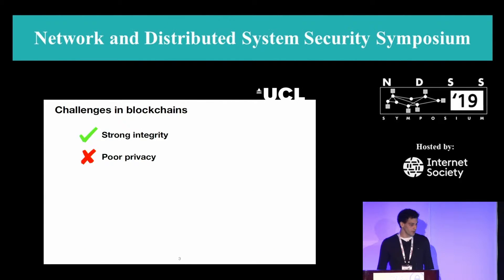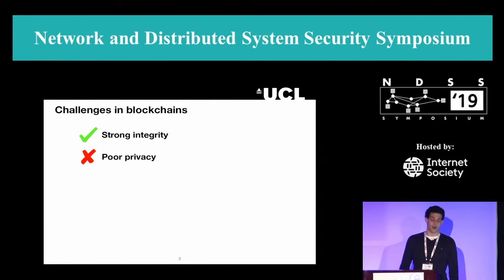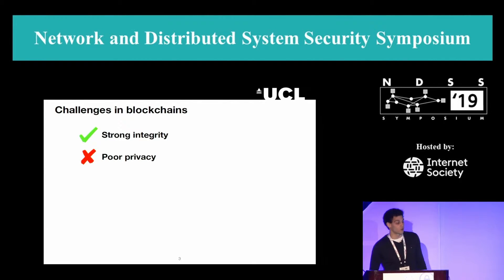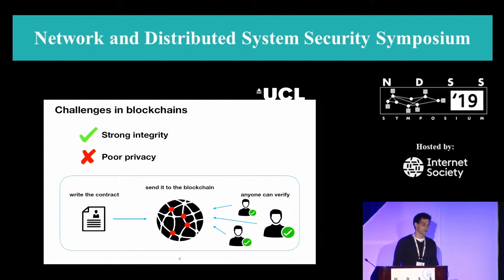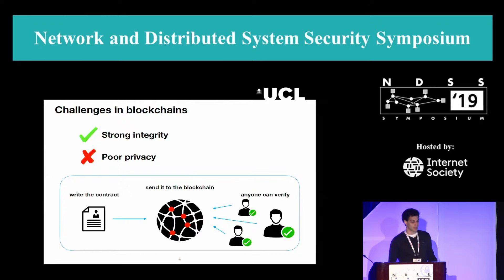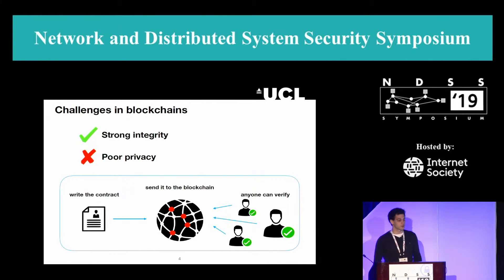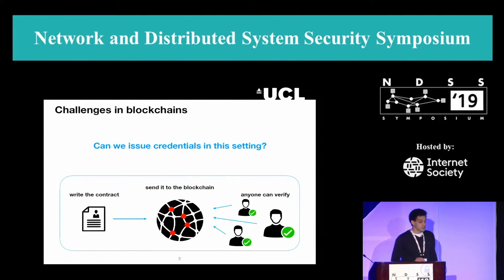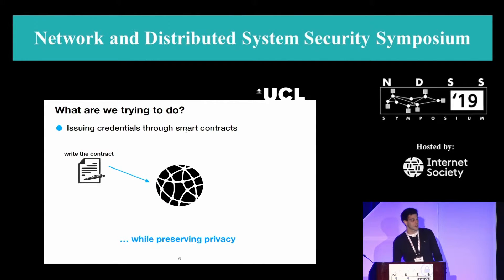All from UCL as well. Here is how the story goes. Among the many challenges that we have in blockchains, we are looking toward the poor privacy that they have. Blockchains are great for high integrity structures but adding privacy is often a little bit complicated. In the general smart contract framework, you have the smart contract, you send it to the blockchain, it gets executed and then anyone can verify.